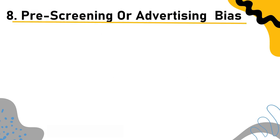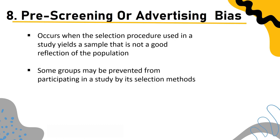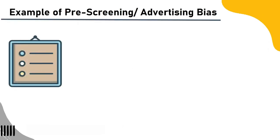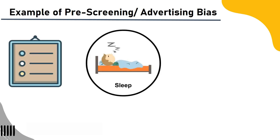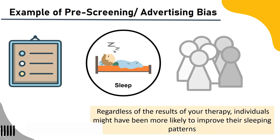Pre-screening or advertising bias: This occurs when the selection procedure used in a study yields a sample that is not a good reflection of the population. Some groups may be prevented from participating by the selection method. While there may be valid reasons to pre-screen participants, doing so might significantly skew results because you may choose individuals with comparable traits that influence the outcome. Example: A sample used to test a novel sleep therapy may be more motivated than the general population to change sleeping patterns, so individuals might have improved regardless of the therapy.